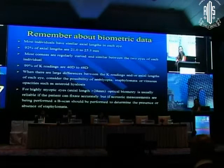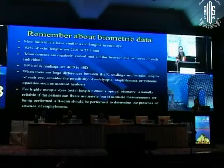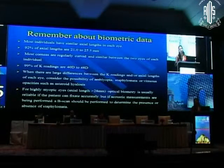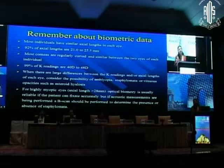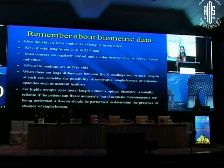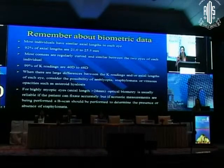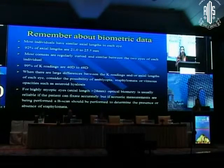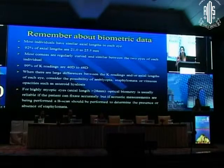Remember certain things about your biometric data. Most individuals have similar axial lengths between the two eyes - 92% of axial lengths fall between 21 to 25.5 millimeters. Similarly, most corneas are regularly curved, and 99% of average K readings are between 40 to 48 diopters. Whenever there are large differences between K readings or axial lengths, consider other possibilities - there could be amblyopia, a staphyloma at the back of the eye, or opacities in the vitreous such as asteroids.